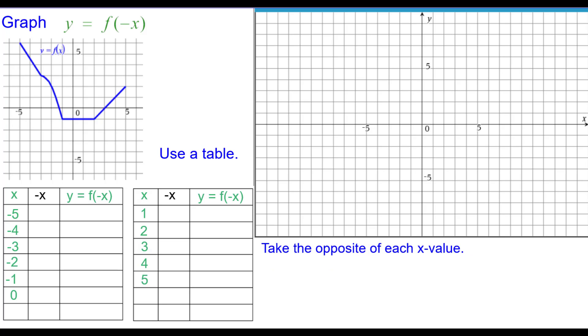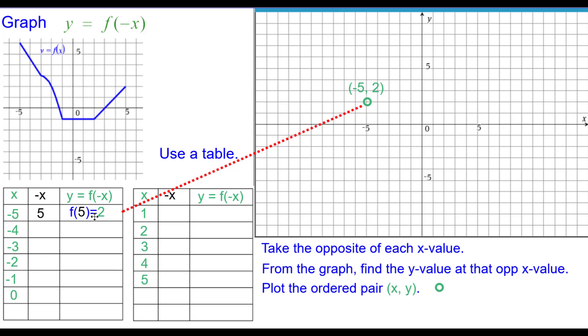We're going to take the opposite of each x value because that's what it says to do, f at the opposite of x. So negative 5 becomes 5. And then we evaluate f at that opposite value, that 5. We need to read that from the graph. So at x equals 5, the y value is 2. And then we plot that ordered pair, negative 5 comma 2.